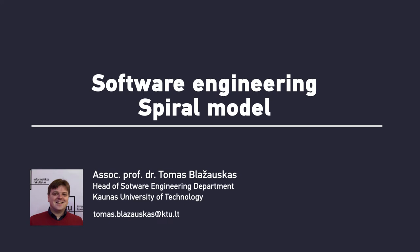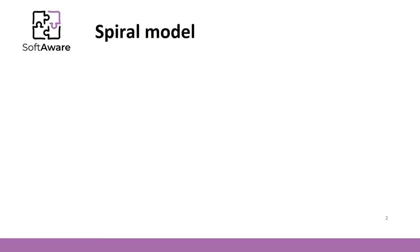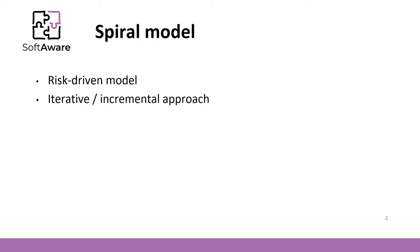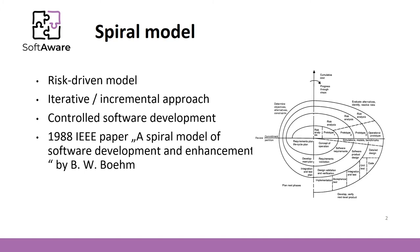Hello, now I will present the spiral model, the notorious software development process. A spiral model is a risk-driven model that emphasizes risk analysis and risk mitigation techniques. It uses an iterative incremental approach with strict control. The model was presented in an IEEE paper, 'A Spiral Model of Software Development and Enhancement' by Boehm, where the famous diagram you see on the right side depicting the spiral model process was introduced.